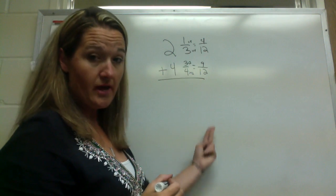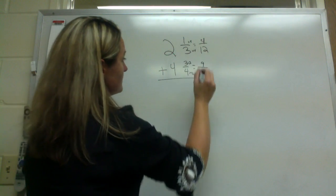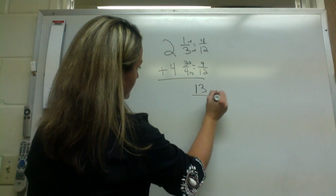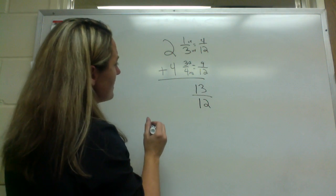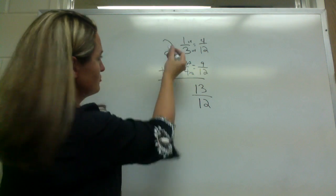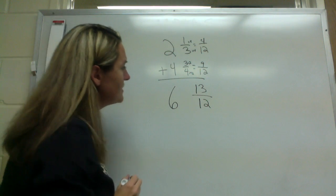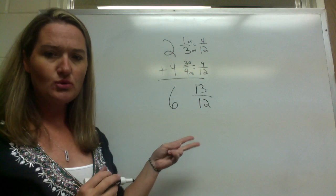Now we're just going to go ahead and add, going down. Four plus nine is thirteen. And remember the denominator still stays the same, twelve. And we're going to go ahead and add our whole numbers, two plus four, that's six. So you have six and thirteen twelfths.